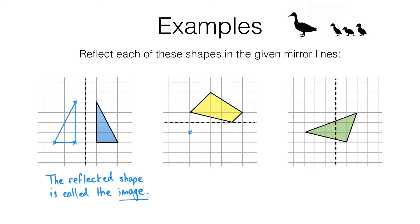The second corner is three squares above the mirror line, and we're going to reflect it three squares below.